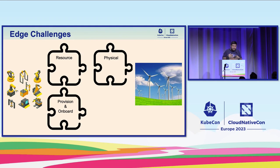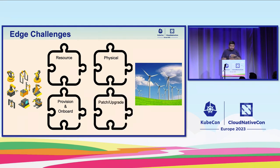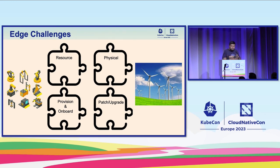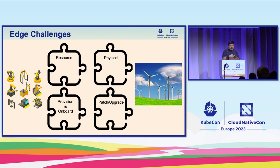Other challenges include provisioning and onboarding — how do we manage dozens, hundreds, and thousands of devices? How do we do lifecycle things, like patching and upgrading the OS? How do we upgrade Kubernetes on these devices? It might be easy to do on a few dozen, but when you get to hundreds and even thousands, that becomes very difficult. And how do we design this for scale — local or even global?